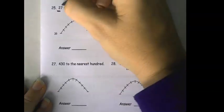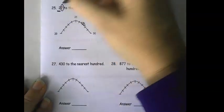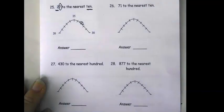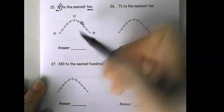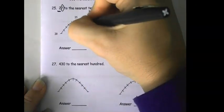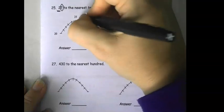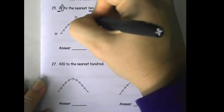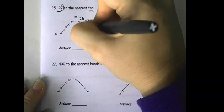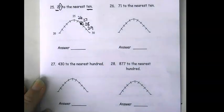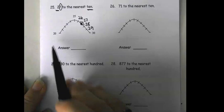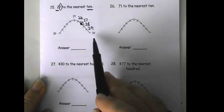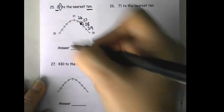I'm going to use the number immediately to the right to make my decision. So, this seven is going to be what helps me decide whether the two stays the same or whether it moves up to 30. So here is 27. We have 26, 27, 28, 29. Is 27 closer to 20 or is it closer to 30? Right, it's closer to 30.